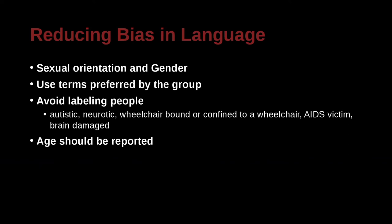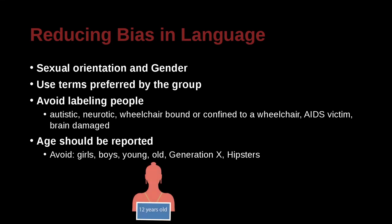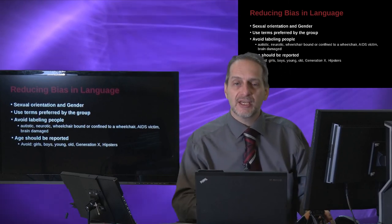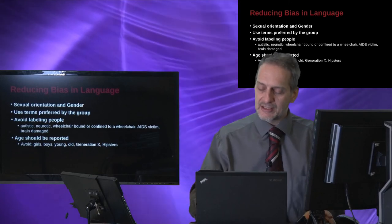When talking about age, be very clear. Don't just say 'girls,' 'boys,' 'young,' 'old,' 'men,' 'women,' 'Generation X,' 'hipsters.' Rather, be very specific: instead of 'girl,' say 'a female of 12 years old.' Instead of 'old,' say 'a male of 65 years old.' Instead of 'Generation Z,' say 'respondents born after the year 2005 and before the year 2015.' Be very clear.